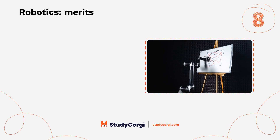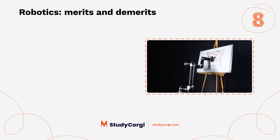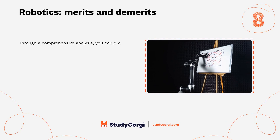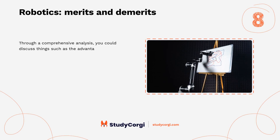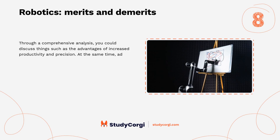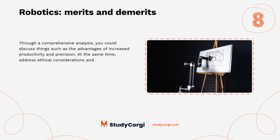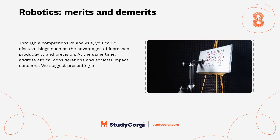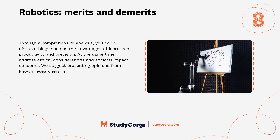Robotics, Merits and Demerits. Through a comprehensive analysis, you could discuss things such as the advantages of increased productivity and precision. At the same time, address ethical considerations and societal impact concerns. We suggest presenting opinions from known researchers in the field of robotics and the opposition.